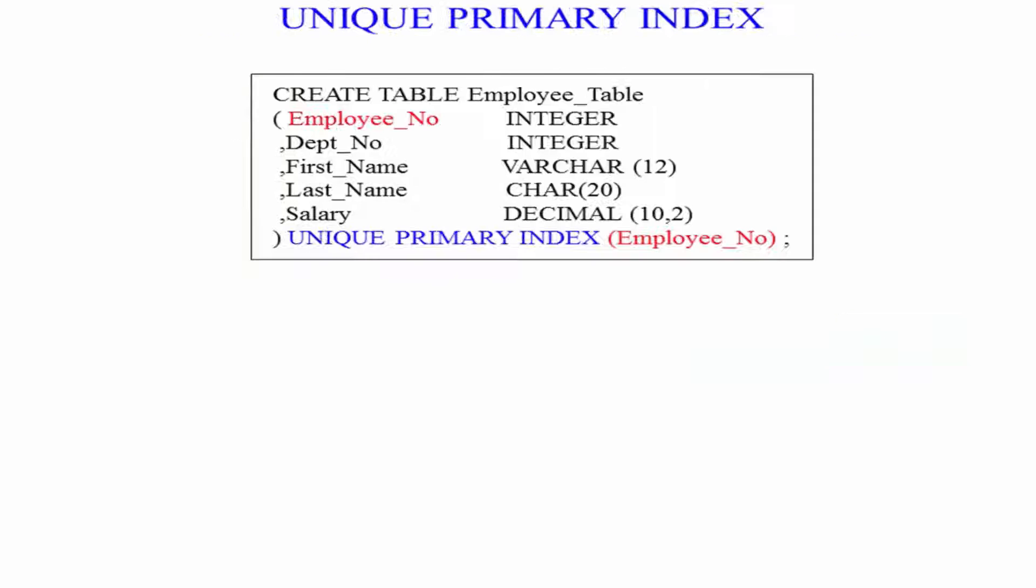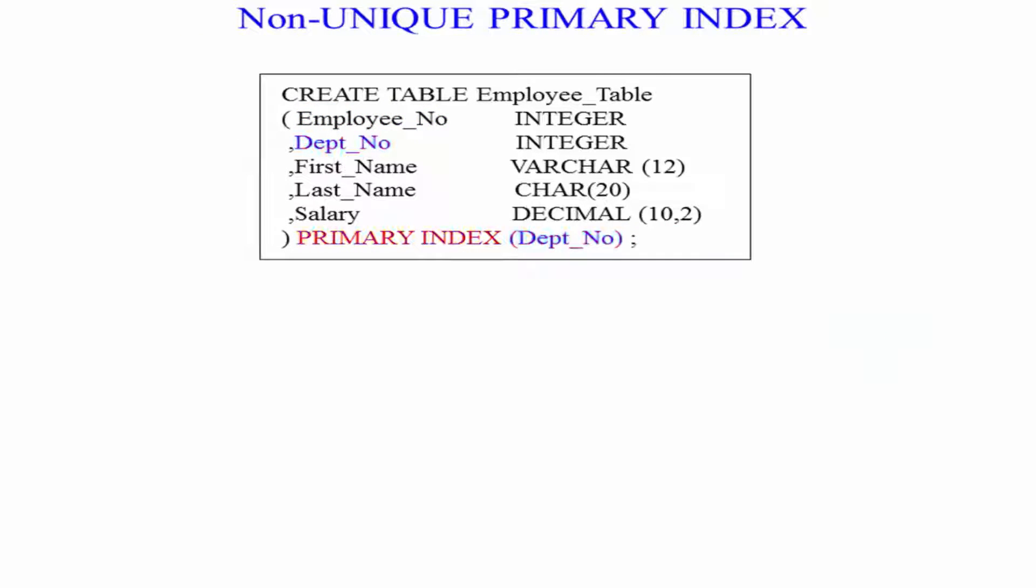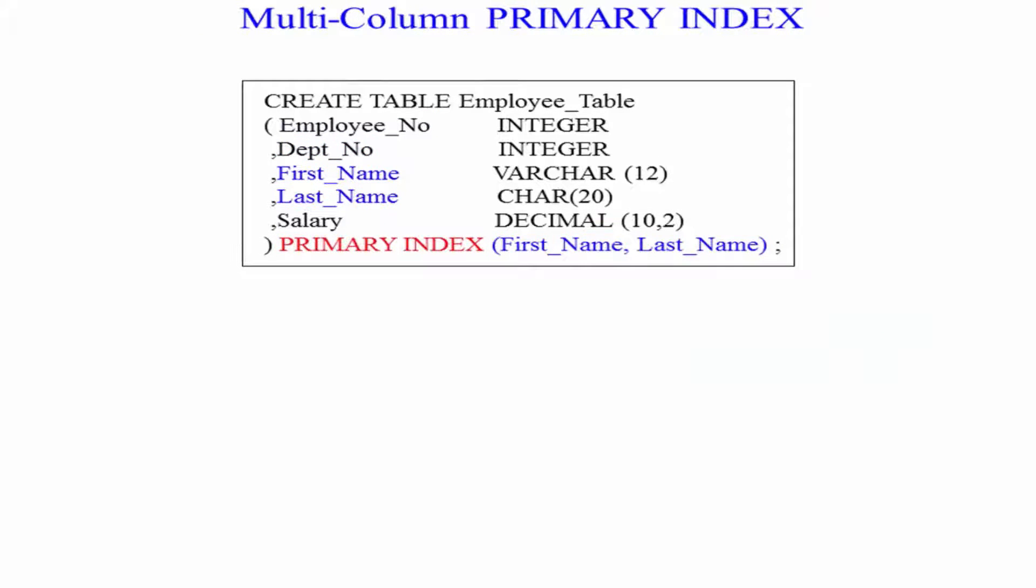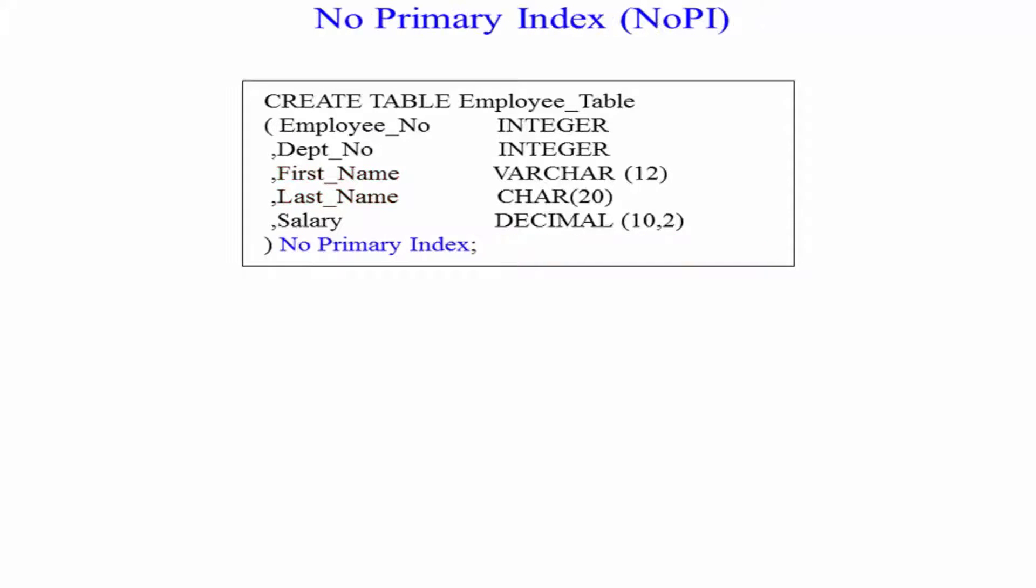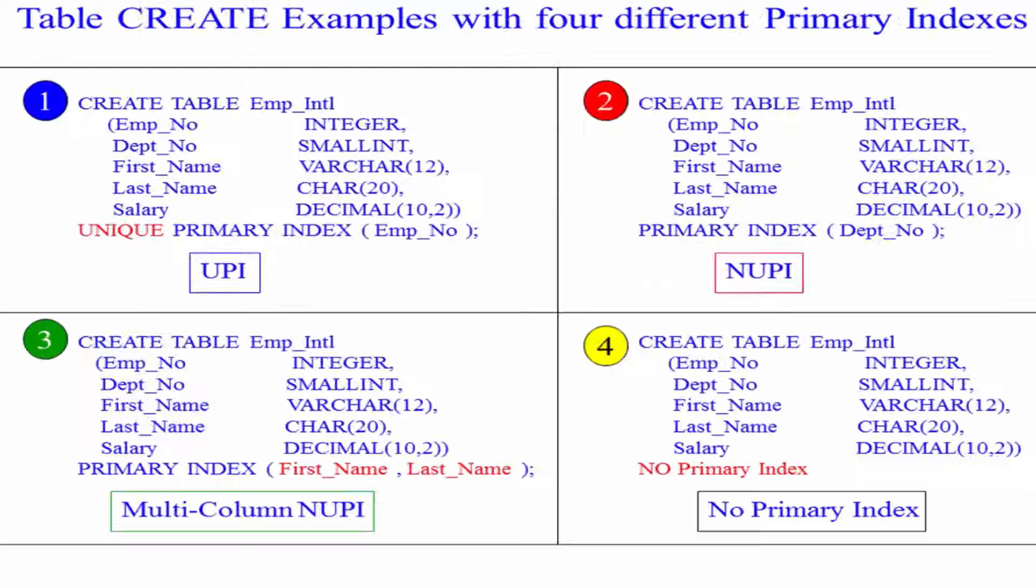Just remember, we've got UPI, NUPI. I can have a multi-column UPI or NUPI, or I can have a no primary index. And those are your options on your Teradata primary index choices.